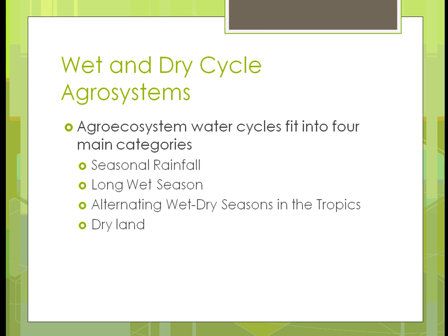Water cycles are categorized into four types based on the amount of rainfall during a period. There's seasonal rainfall, which most of us have over certain periods of the year. There's a long wet season in warmer, more tropical areas. Then alternating wet and dry, also found in some tropical areas. And finally, arid dry lands — desert areas — that are pretty much always dry and don't get much rain at all.